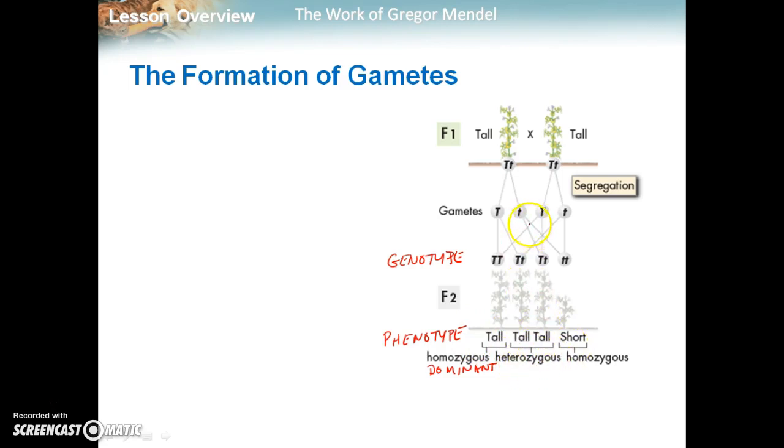We could also get big T, little T, and big T, little T is called heterozygous. Hetero meaning different. And so we have different alleles in the same cell for the same trait. Heterozygous, because I have a dominant allele, is going to give me the dominant phenotype.